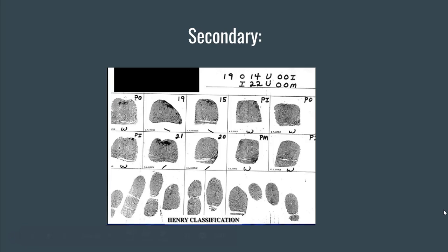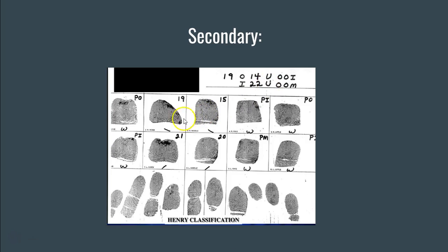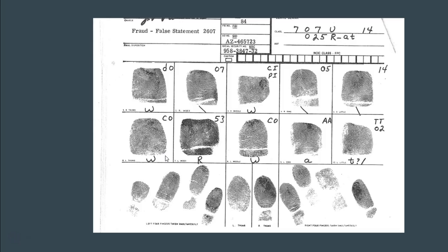Looking at this fingerprint card, we can see a secondary of capital U over capital U, because when we look at finger number two and finger number seven on the card, they're both ulnar loops. We write a capital U on top indicating that the number two fingerprint is an ulnar loop, and one capital U below because the number seven finger is also an ulnar loop. In this other card, the secondary has a capital U indicating finger two is an ulnar loop, and a capital R indicating finger seven is a radial loop.